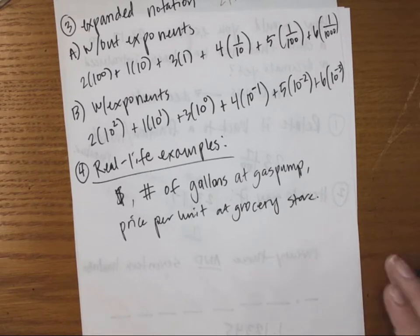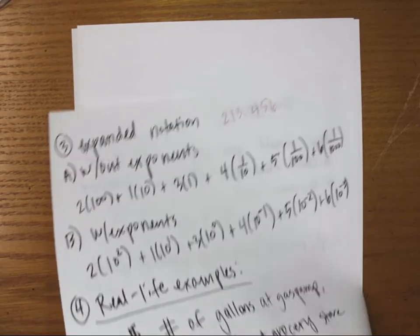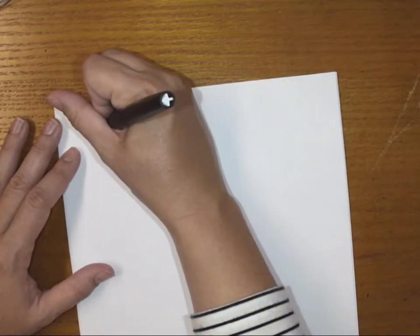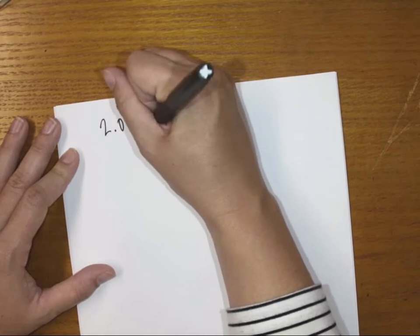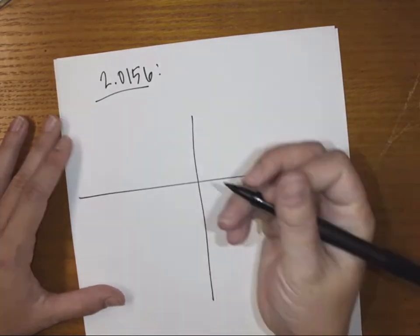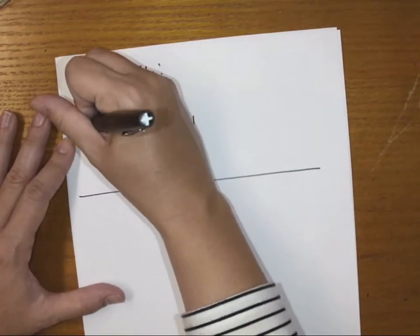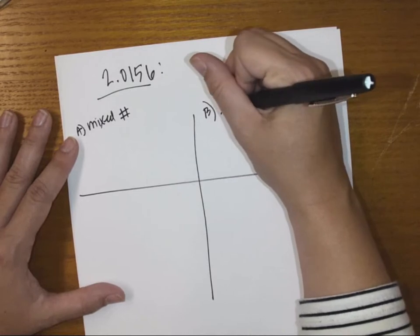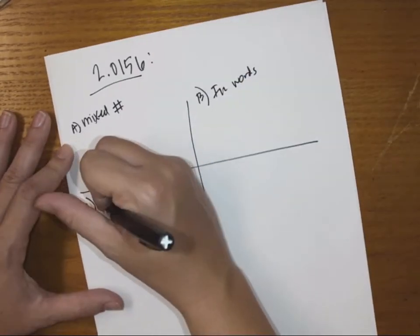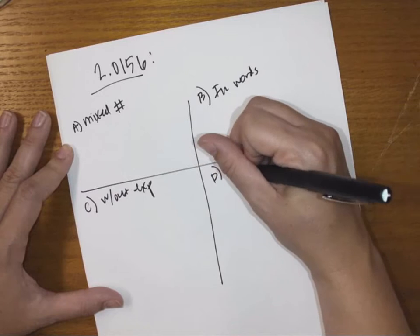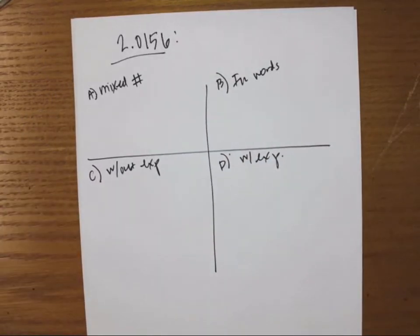Let's practice the different notations for decimals. I'll give you the number 2.0156 — I'm saying it that way so we can practice writing it correctly. I want you to write it as a mixed number, in words, in expanded form without exponents, and in expanded form with exponents. Pause the video and try it, then resume to check your answers.